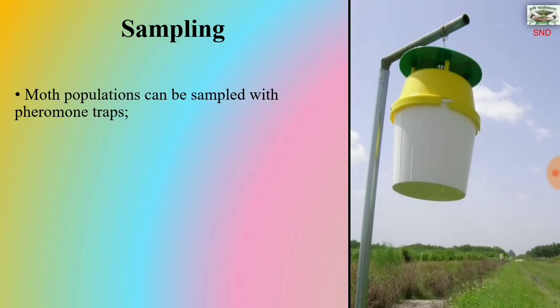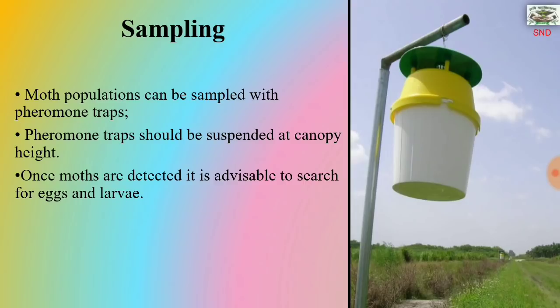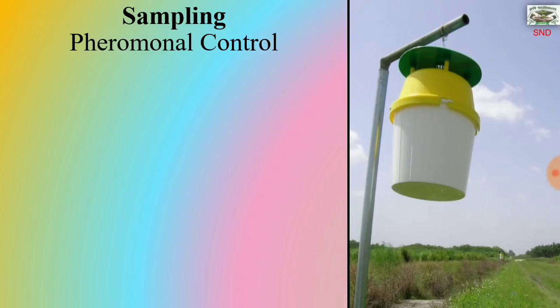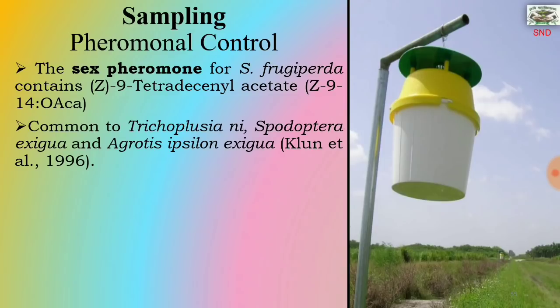Sampling methods: moth populations can be sampled with pheromone traps, which should be suspended at canopy height. Once moths are detected, it is advisable to search for eggs and larvae for subsequent management. The sex pheromone for Spodoptera frugiperda contains Z9-tetradecenyl acetate, which is common to Trichoplusia ni, Spodoptera exigua and Agrotis ipsilon.